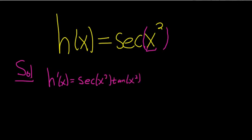That's the derivative of secant times the derivative of the inside function. Our inside function is x², so that's simply 2x.